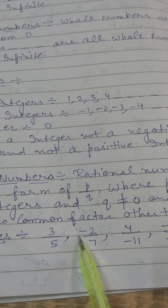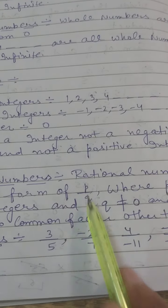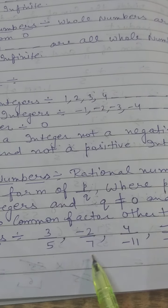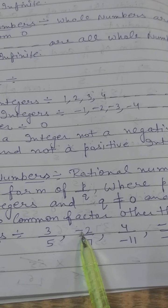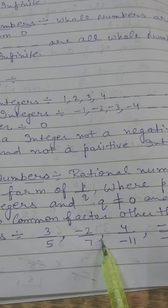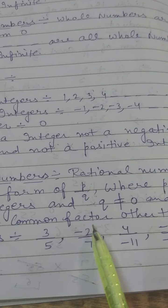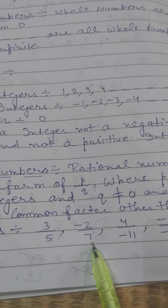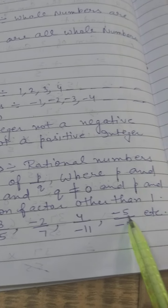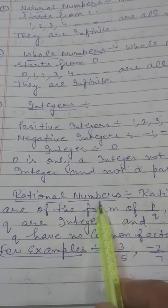Similarly, -2/7 is a rational number because it is of the form p over q. Here p is -2 (a negative integer) and q is 7 (a positive integer). q equals 7, which is not equal to 0, and 1 is the only number that divides -2 and 7. Therefore, 4 over -11 and -5 over -8 are also all rational numbers.